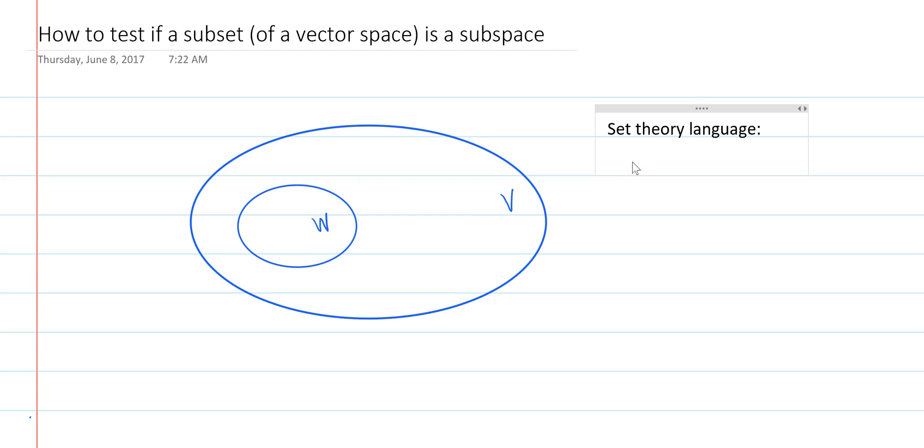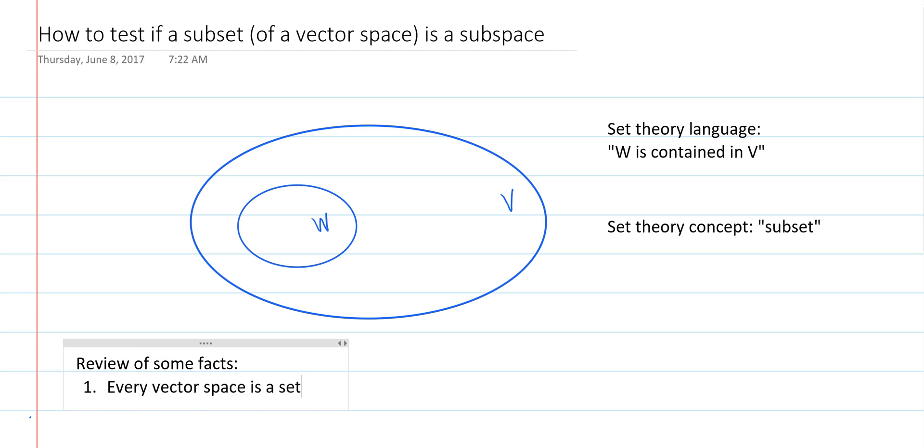So the language I'm using such as W is contained in V, and the diagram I'm drawing using those ellipses, those are trying to describe the idea of a subset. As we remember, vector spaces are sets to begin with. So every vector space is a set, but not every set is a vector space.